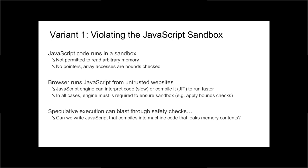The JavaScript engine will either interpret or compile code and will insert bounds checks to ensure type safety and memory safety. But with speculative execution, we can potentially bypass those safety checks and access memory that should not be accessible to us.